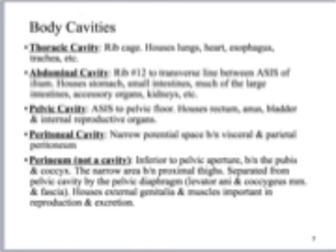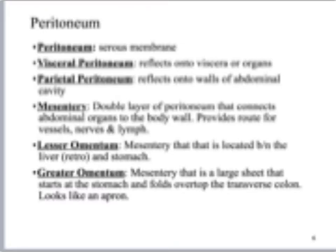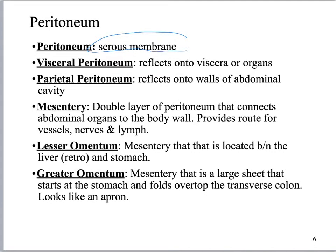If you do not remember your body cavities, you need to go back and re-memorize them — they are important. The serosa in the abdominopelvic cavity is called the peritoneum. If it's going around an organ it's visceral; if it's going up onto the walls of the abdominal cavity it is called parietal.